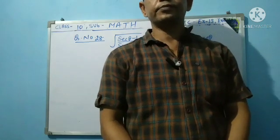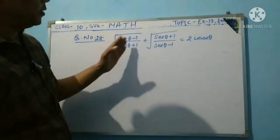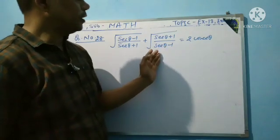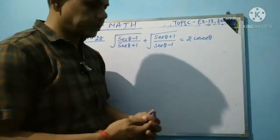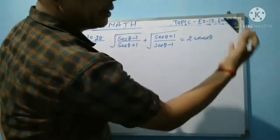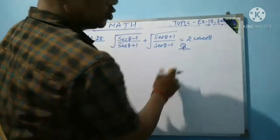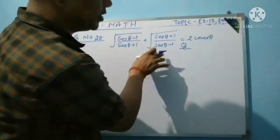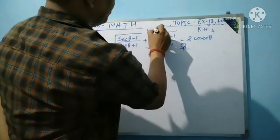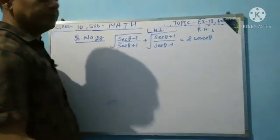Question number 28: under root of (sec²θ − 1) divided by (sec θ + 1), plus under root of (sec θ + 1) divided by (sec θ − 1), equals 2 cosec θ. First thing: identify the left hand side and right hand side. The bigger term is always taken as LHS and the smaller side is RHS.